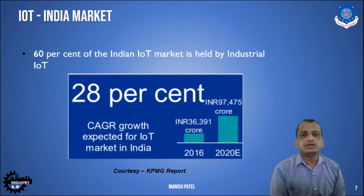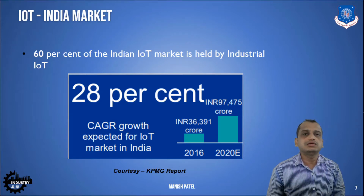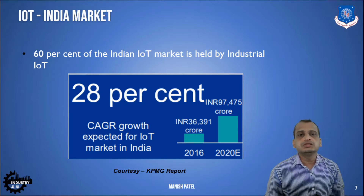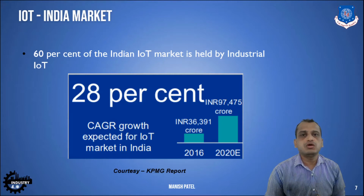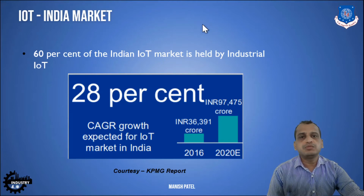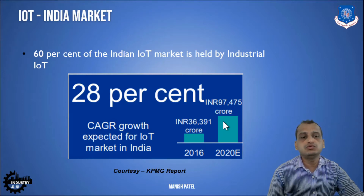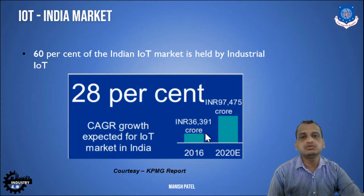Looking at the IoT market in India, almost 60 percent is focused on industrial IoT, which is different from outside India where the main focus is on home automation. In India the Internet of Things is dedicated towards industrial automation. The CAGR is 28 percent — from 2016 figures of 36,000 crores, it is estimated to grow to 97,000 crores by end of 2020, more than double.